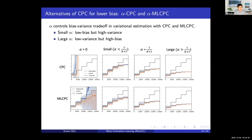A toy experiment confirms the bias-variance tradeoff controlled by α. When α = 1/(K+1), this is exactly original CPC. Choosing smaller α gives lower bias but higher variance. Choosing α near zero gives very high variance. Choosing large α gives low variance but high bias. The main message is that α controls the bias-variance tradeoff in this variational estimator.